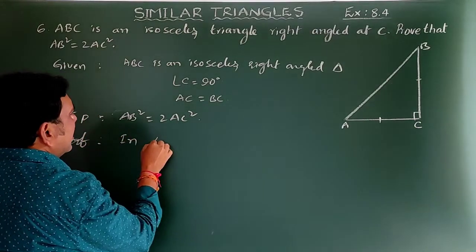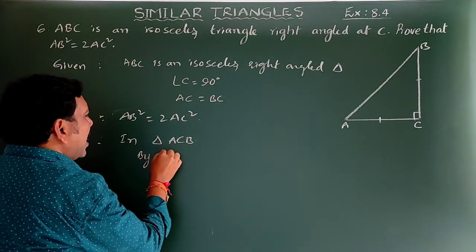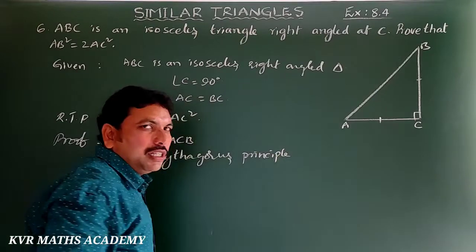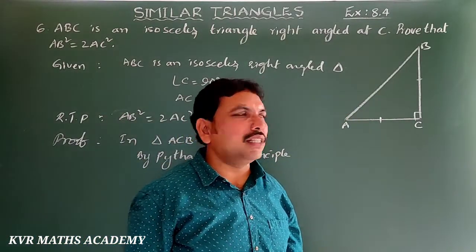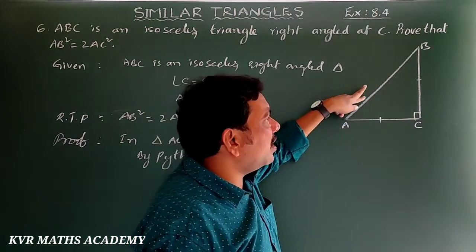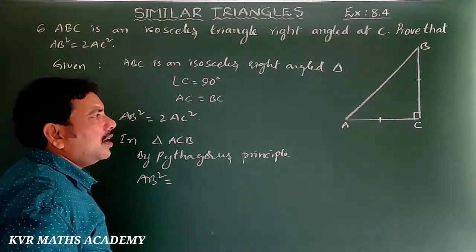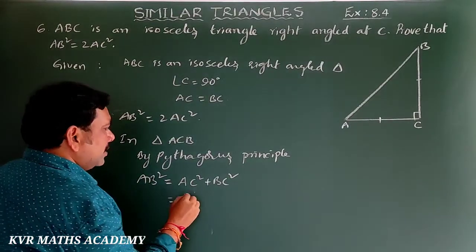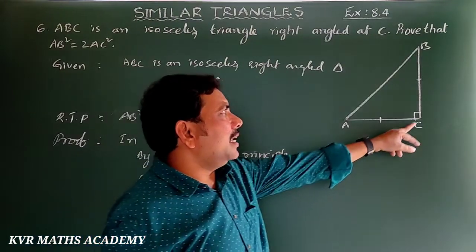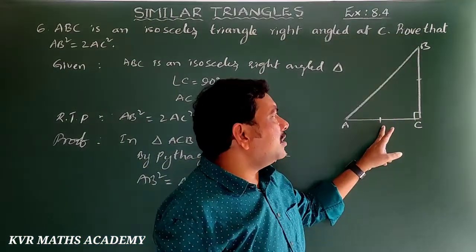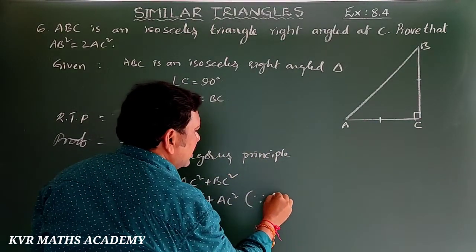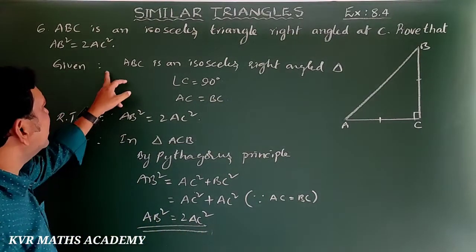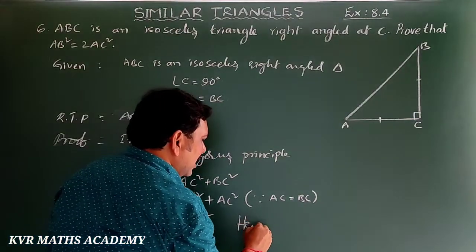Proof: In triangle ACB, by the Pythagoras theorem, the square of the hypotenuse equals the sum of squares of the other two sides. So AB² = AC² + BC². Since AC = BC (isosceles triangle), substituting BC with AC gives AB² = AC² + AC² = 2AC². Hence proved. This is a very easy sum.